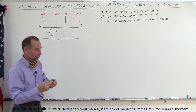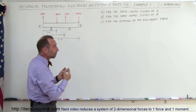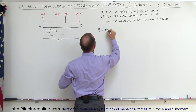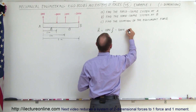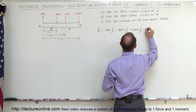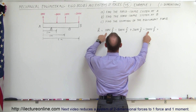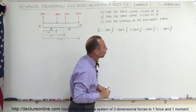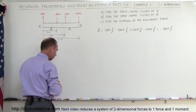First, we find the resultant force. Since all forces act in the vertical y-direction, we can simply add them vectorially. The resultant force R equals positive 100 newtons, minus 800 newtons, plus 200 newtons, minus 300 newtons. Adding those up gives minus 800 newtons in the y-direction — that is the resultant, acting in the negative y-direction.